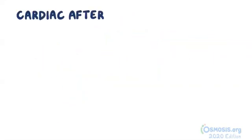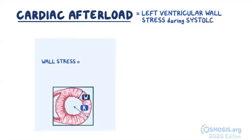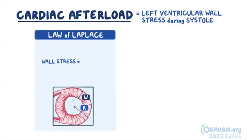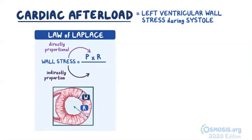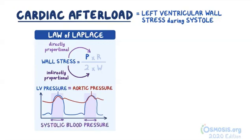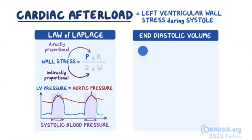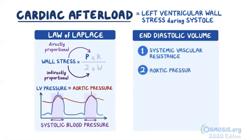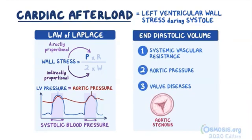As a quick recap: afterload is defined as the left ventricular wall stress during systole or ejection. Through the law of Laplace, afterload is directly proportional to left ventricular pressure and radius during ejection, and indirectly proportional to 2 times the left ventricular wall thickness. For simplicity, left ventricular wall stress during ejection is proportional to left ventricular pressure during ejection, which we equate to systolic blood pressure. Finally, factors that affect left ventricular afterload include systemic vascular resistance, aortic pressure, and valve diseases such as aortic stenosis and mitral regurgitation.